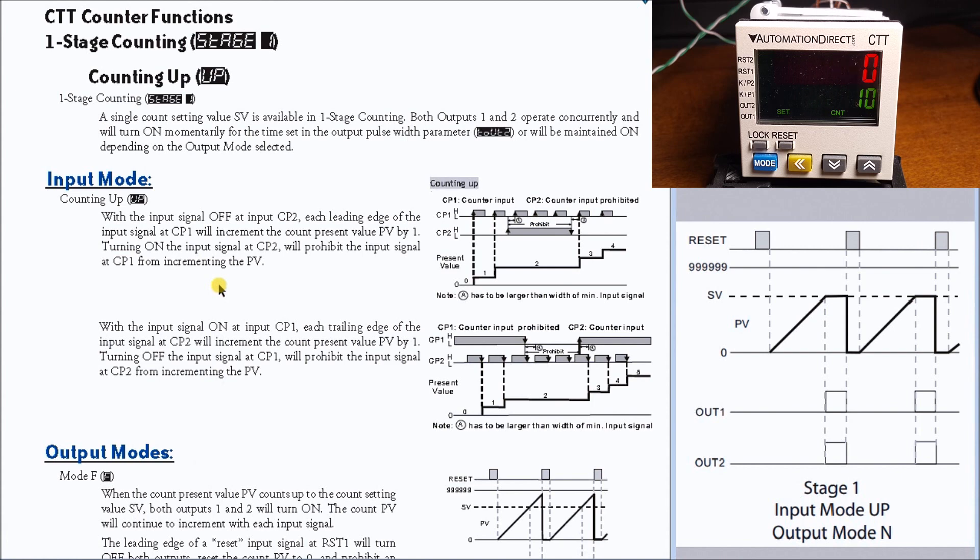Stage 1 up counting - our input mode is actually going to be set for up. Looking at the timing charts, you take the leading edge of CP1 without CP2 on and it will increment that count value up to the set point value.